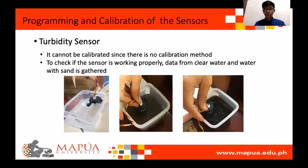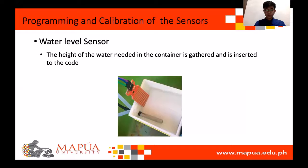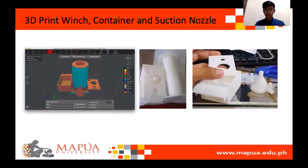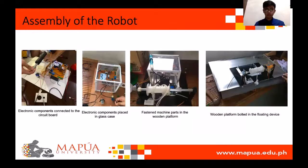The turbidity sensor has no calibration method; we just check if the sensor is working by getting readings from 3 water samples with different cleanliness. The water level sensor is calibrated by gathering the average height of water in the container over 5 trials, and the average height is inserted in the code. Here are the 3D printed parts for the robot. Assembly steps include: connection of components in the circuit board, placing it in a glass case for waterproofing, fastening the machine parts in a wooden platform for easy transport, and connecting the robot to the floating device.